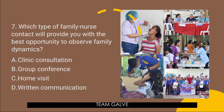Question number seven: Which type of family nurse contact will provide you with the best opportunity to observe family dynamics? Is it A, clinic consultation? B, group conference? C, home visit? Or D, written communication? The answer is letter C, home visit. The dynamics of family relationships can best be observed in the family's natural environment, which is the home.